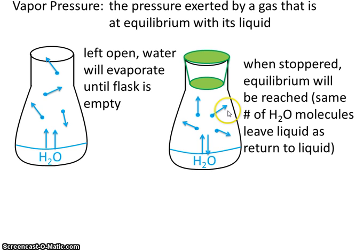Now we know from our study of gases that this gas will exert a pressure. Well, that's what vapor pressure is. The pressure exerted by a gas that is at equilibrium with its liquid. So this is the gas that's exerting a pressure. The pressure that it's exerting is called the vapor pressure.